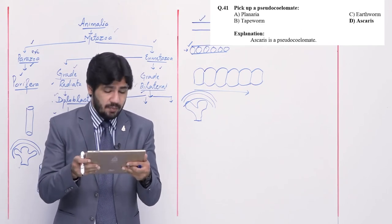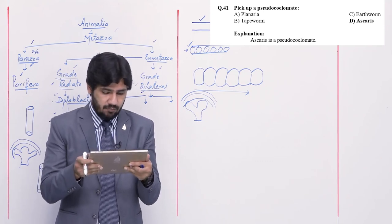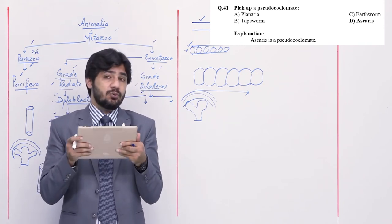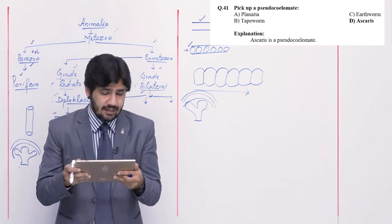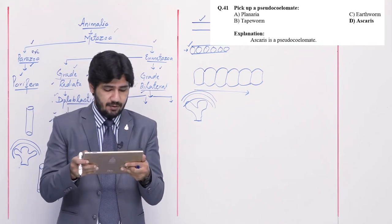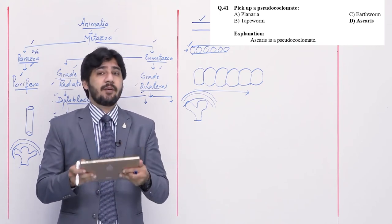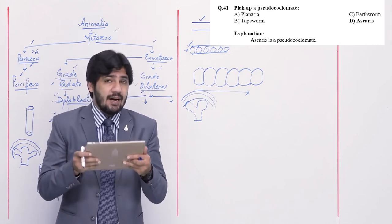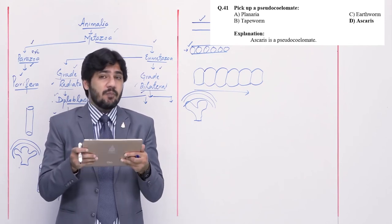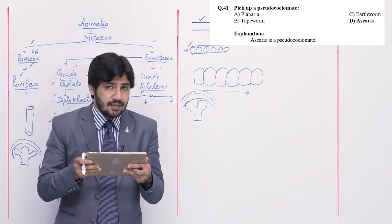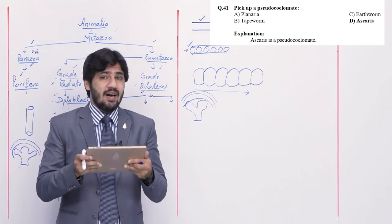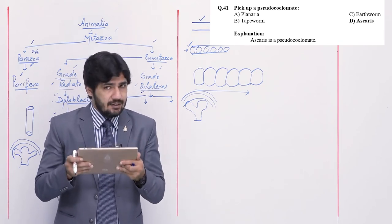Question number 41: pick up a pseudocoelomate — alpha Planaria, beta tapeworm, charlie earthworm, and delta Ascaris. Planaria belongs to Platyhelminthes — acoelomate, not pseudocoelomate. Tapeworm also belongs to Platyhelminthes — acoelomate. Earthworm belongs to annelids — coelomate. Ascaris belongs to nematodes (Ashhelminthes) — pseudocoelomate category. Right option is delta — Ascaris.